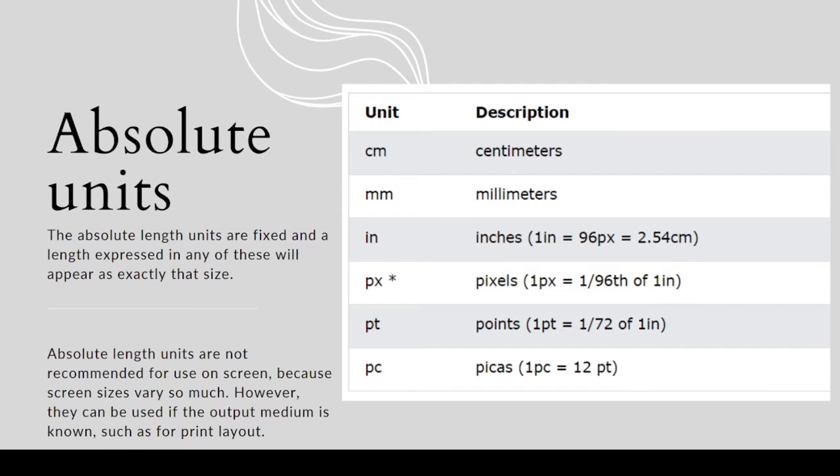For example, if your screen is 150 centimeters and you give a division a width of 50 centimeters, it will take 50 centimeters whether you view it on desktop or mobile, which is not good for creating a responsive website. That's why we don't use CSS Absolute Units on websites or digital pages.